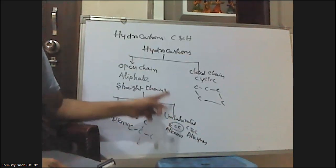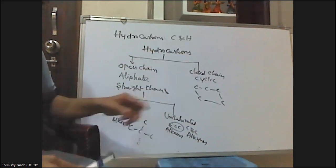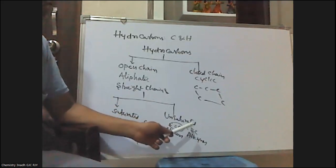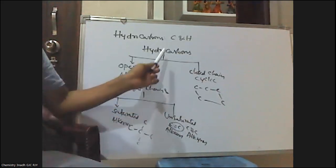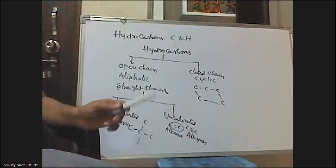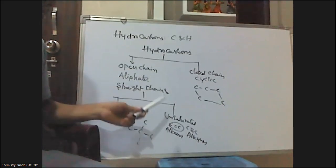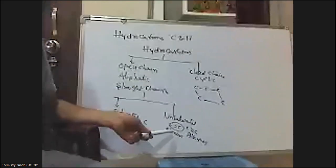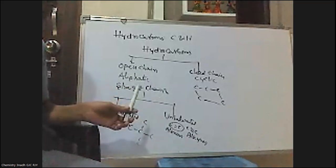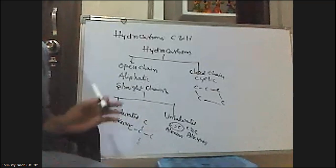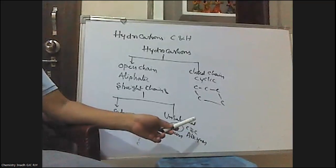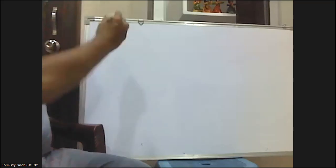Alkenes are the unsaturated open chain hydrocarbons containing at least one carbon-carbon double bond. Alkynes are the unsaturated open chain hydrocarbons containing at least one carbon-carbon triple bond. In my previous videos I have discussed the preparation methods for alkanes and alkenes, and similarly their chemical properties. In this video we are focusing on preparation methods of alkynes.